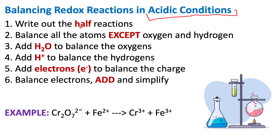First off we're going to write out our half reactions. We're going to balance out all the atoms except for oxygen and hydrogen. Then we're going to balance out the oxygens by adding in water. We balance the hydrogens by adding H+. We balance the charge by adding electrons, and then we balance the electrons and add and simplify the half reactions.